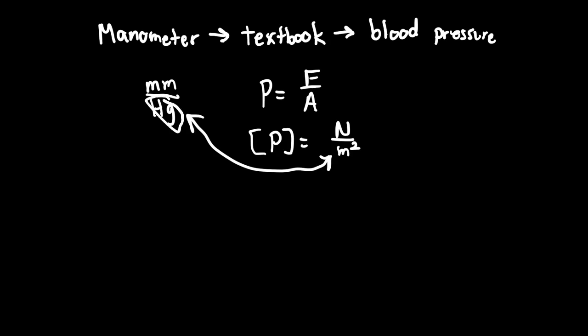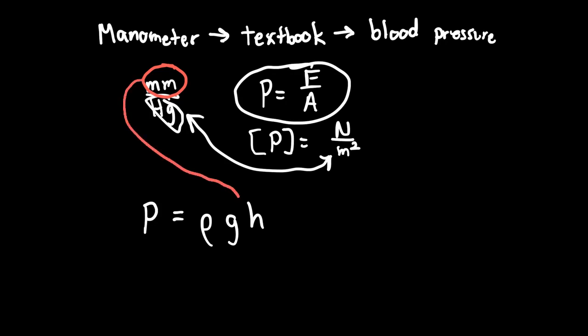If we look at our definition of pressure as force over area, this seems really weird. The pressure units should be newtons per meter squared, but blood pressure is millimeters of mercury. That makes no sense. It's only when you start thinking about how pressure is measured inside a fluid. We're measuring pressure of a fluid, mercury. We go back to our equation, pressure in a fluid is density times gravity times height.